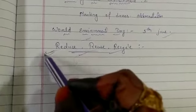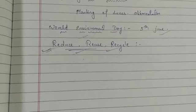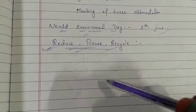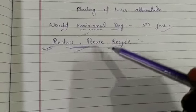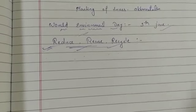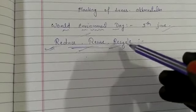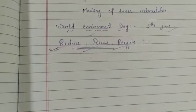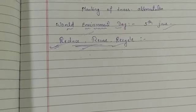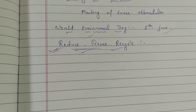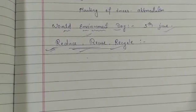Reduce means we should reduce waste generation as much as possible. Reuse means we should reuse things in different ways rather than throwing them — instead of throwing, we can reuse them. Recycle means we should recycle used things or use recyclable things. These three are the effective ways through which we can save our natural resources.